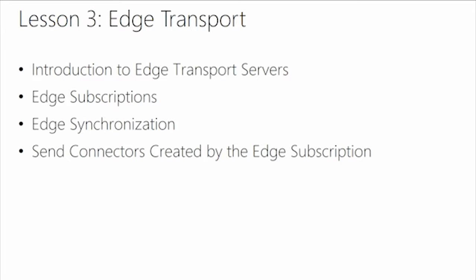If you want to set up an edge server, you set up what they call an edge subscription. You subscribe an edge server in your perimeter network to a mailbox server on your internal network, and that mailbox server is responsible for keeping the edge server's configuration up to date. It's important to note that the edge server doesn't connect to the mailbox server for its configuration — the mailbox server connects to the edge server. This is a strong security requirement because some organizations don't want perimeter servers connecting to internal servers, as that creates a hole in the firewall.